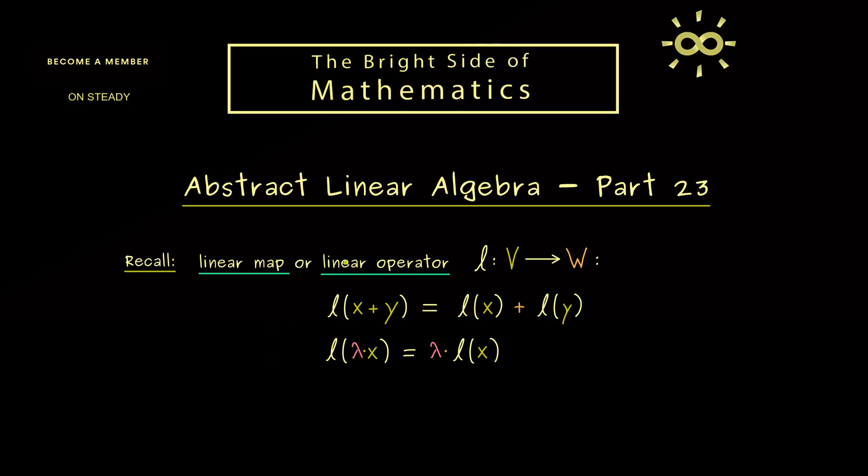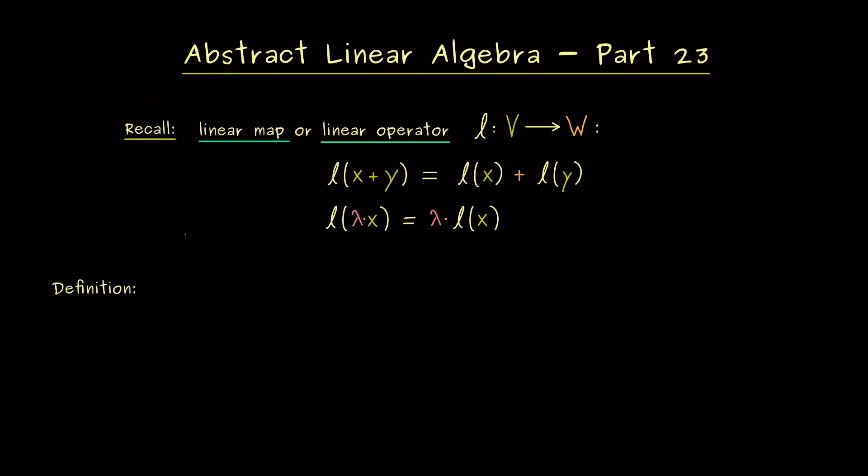However, before we do that, we first have to talk about some properties of such linear maps. And the first thing here is that we can combine them with vector addition and scaling as well. For this, let's fix two general vector spaces again. They can be completely different, but they should have the same field of scalars. And then we just consider two linear maps defined on V.